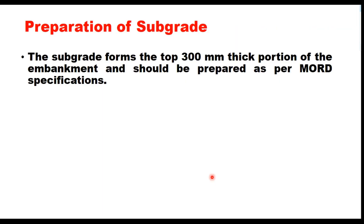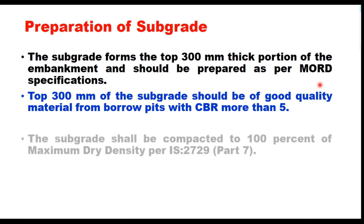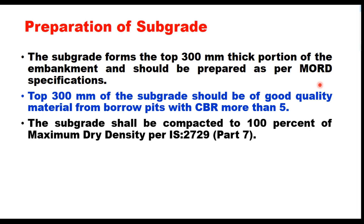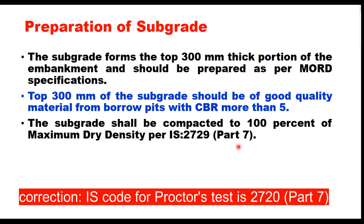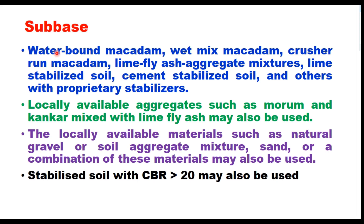The first step is preparation of the subgrade. The top 300 mm of the embankment forms the subgrade and should be prepared as per MORD specifications, with CBR more than 5%. If the subgrade is of sandy or silty nature, it should be compacted to 100% of maximum density as per IS2729 Part 7. If the subgrade is of plastic nature — such as expensive black cotton soil — it is compacted to a minimum of 95% of maximum density, and field moisture content during compaction can be 2% higher than the optimum.